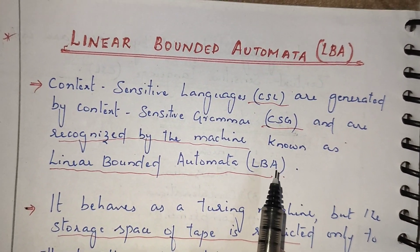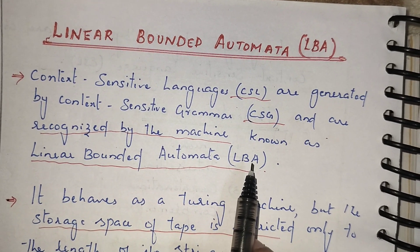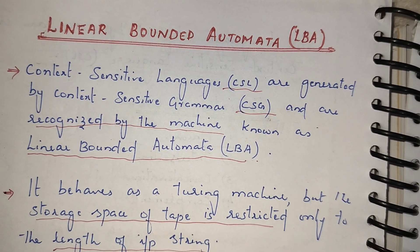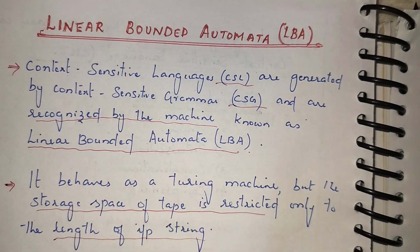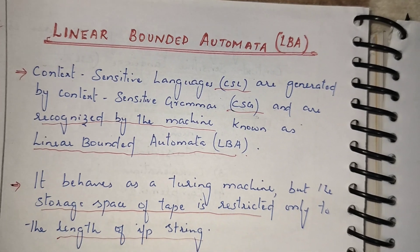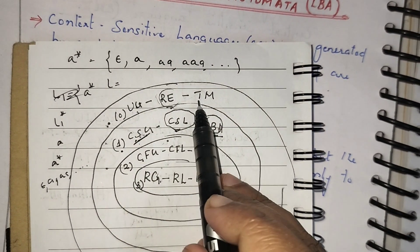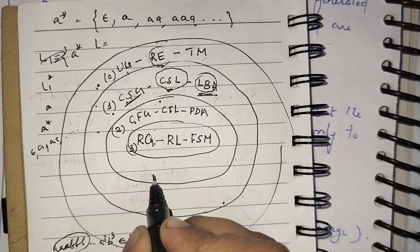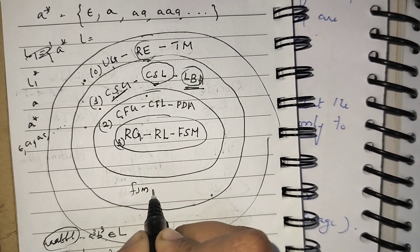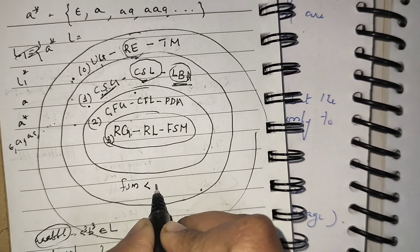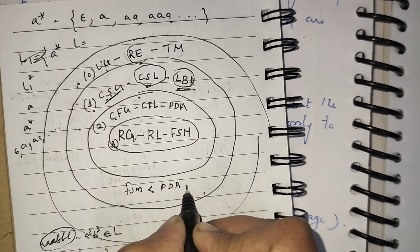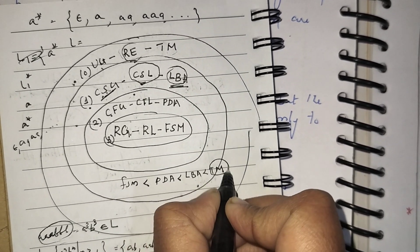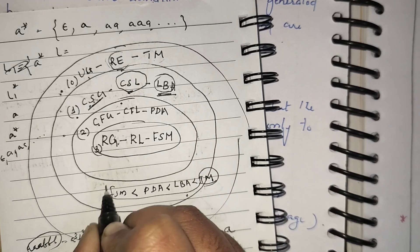The machine name is linear bounded automata. If we are comparing it with Turing machine, linear bounded automata has less power compared to Turing machine. Turing machine recognizes Type 0 grammar. By comparison: finite state automaton has less power than push down automata, which has less power than linear bounded automata, which has less power than Turing machine. So, Turing machine is more powerful than these machines.